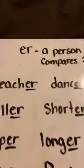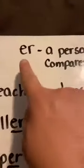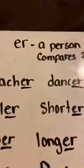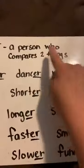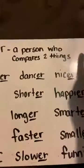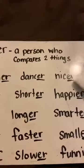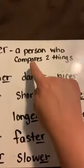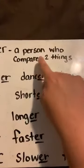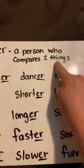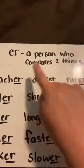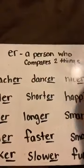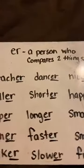The suffix we're going to talk about today is '-er.' And '-er' means a person who does something, or it compares two things. So '-er' is a person who does something.